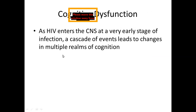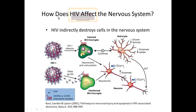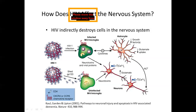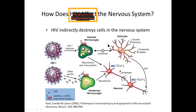As HIV enters the CNS at a very early stage of infection, a cascade of events leads to changes in multiple realms of cognition. HIV indirectly destroys cells in the nervous system — it infects the microglia, which are the macrophages in the CNS, and these infected microglia release neurotoxins that affect neurons, causing apoptosis or neurotoxicity. Shared viral proteins like GP120 also bind the microglia, leading to further release of neurotoxins impacting neurons and astrocytes.